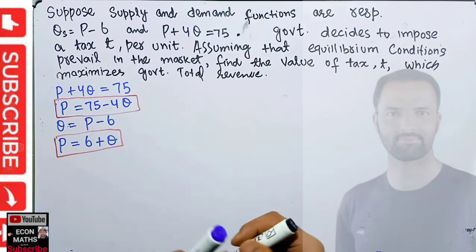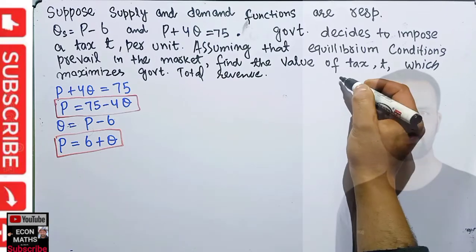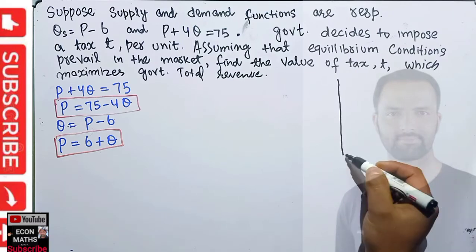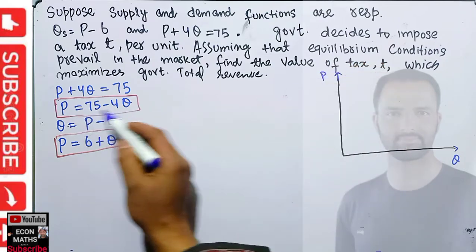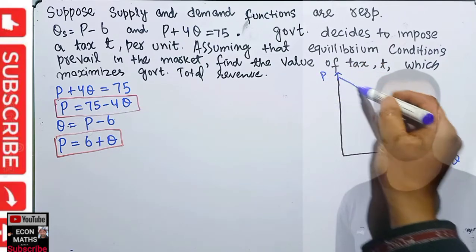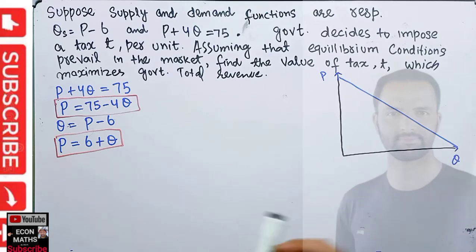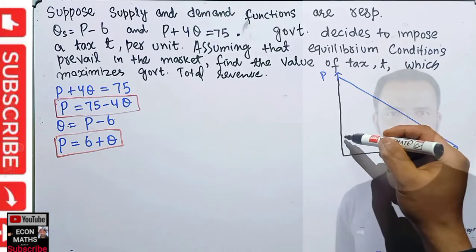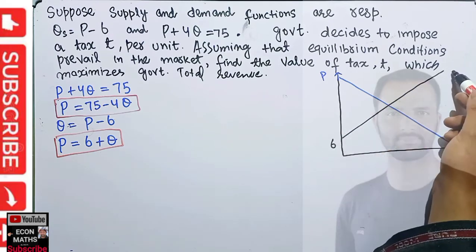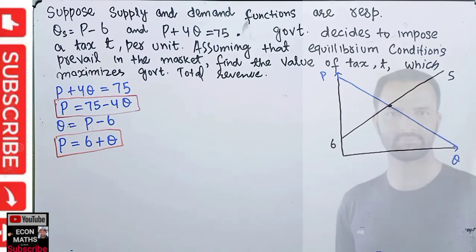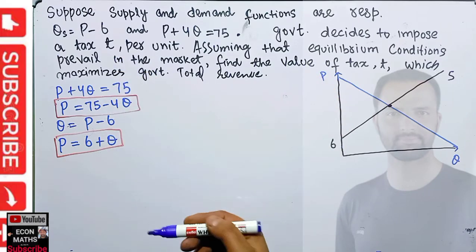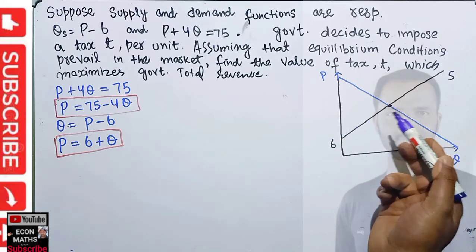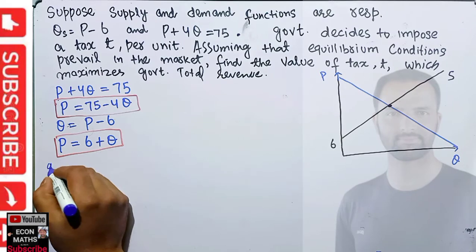Now the government tries to impose a tax T. Let me also draw the graph. This is quantity on the x-axis and price on the y-axis. The demand function has intercept 75. This is our demand function and this is our supply function. Initially we are at the equilibrium point before the tax.